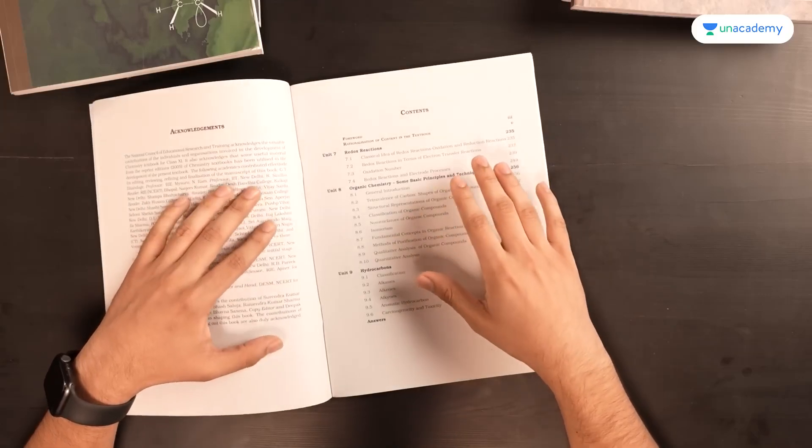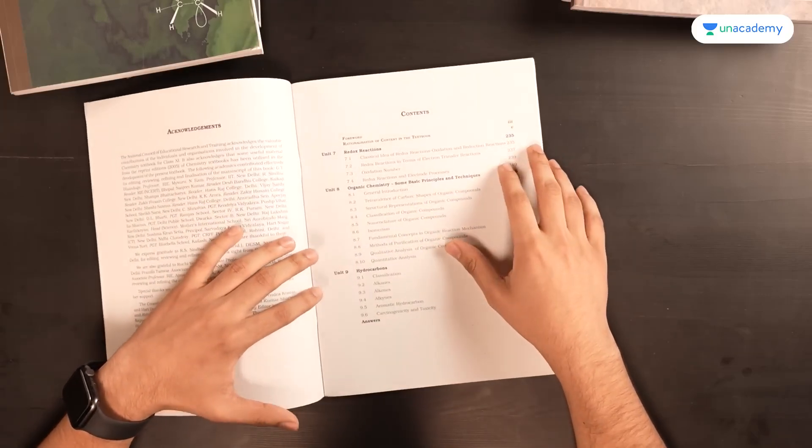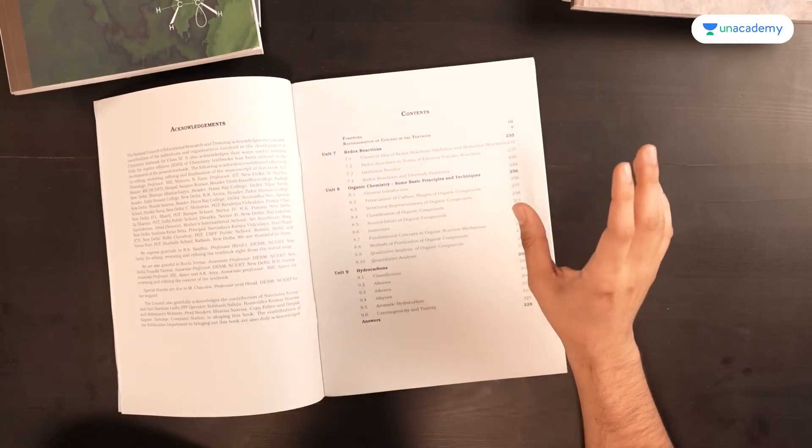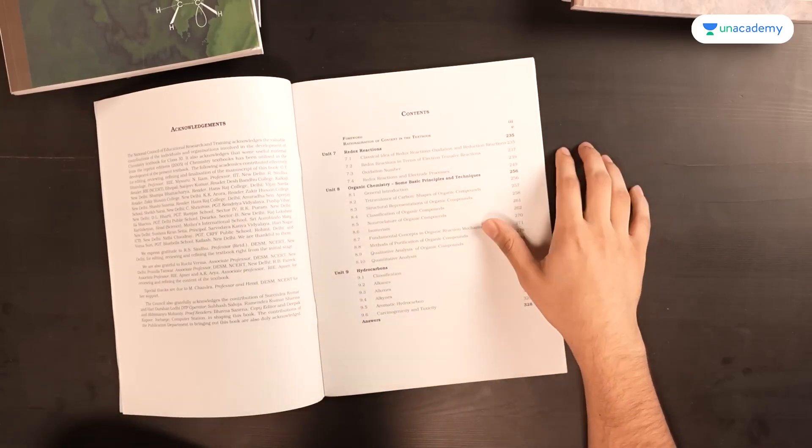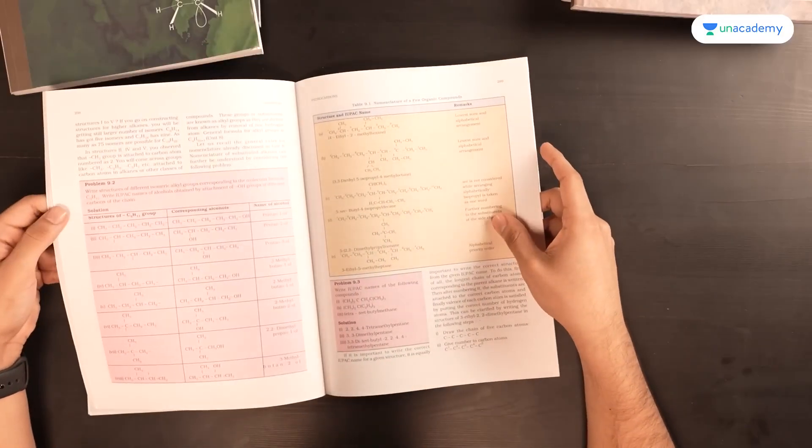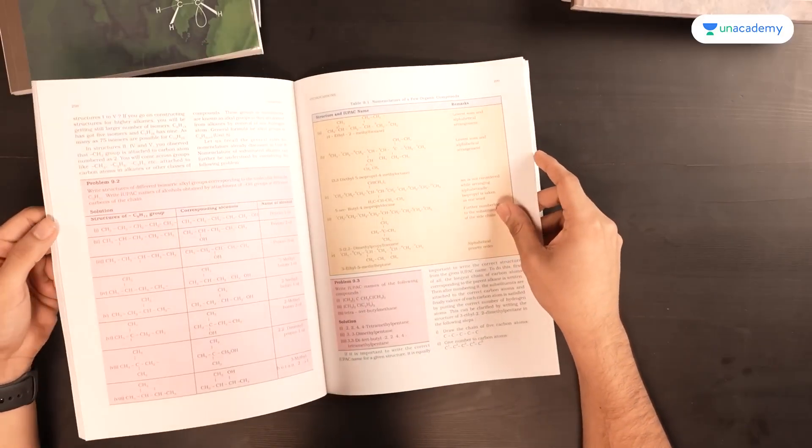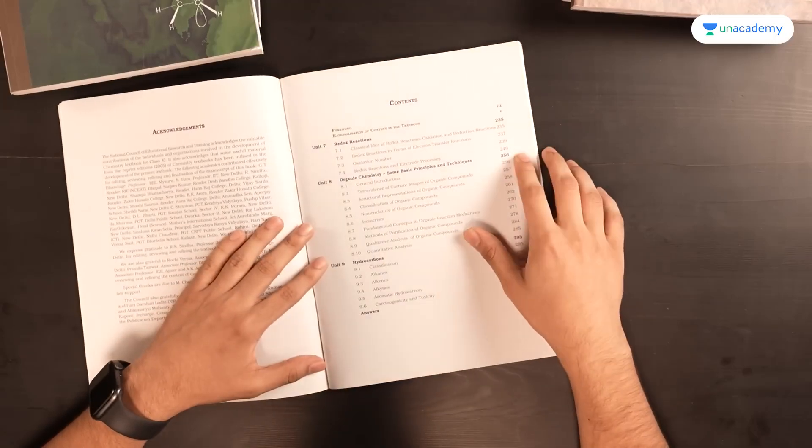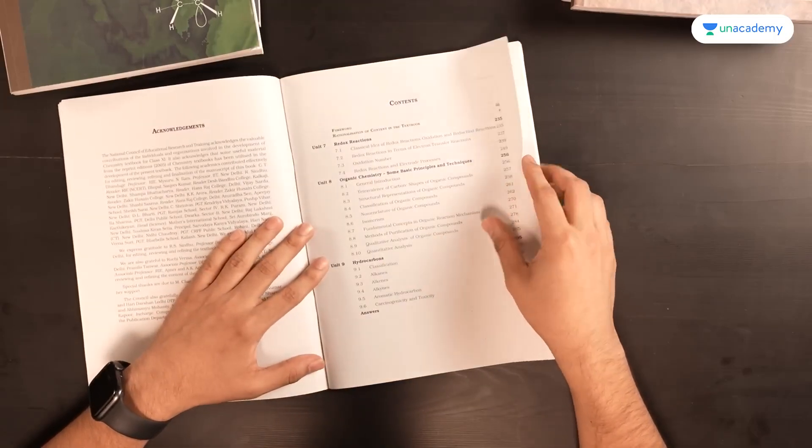What you can do for orders in organic chemistry is that make separate notebook for those and revise those whenever you get time. For theory, it's always good to read the organic chemistry theory again and again as it's very important and also very volatile. The number of readings you give for organic chemistry is going to benefit you in the same way.